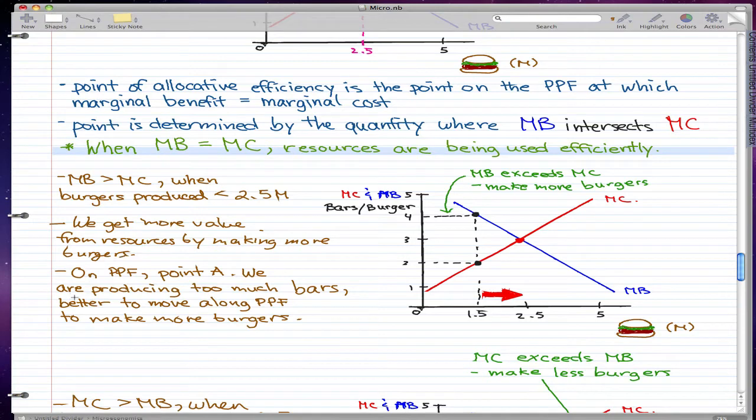So on the PPF, point A, we are producing too much bars. Better to move along PPF to make more burgers.